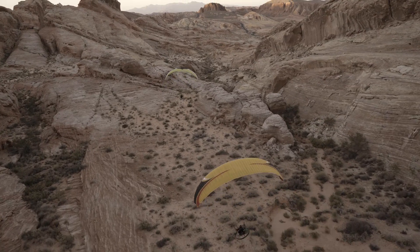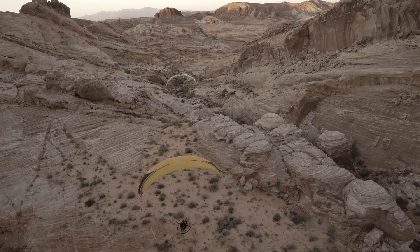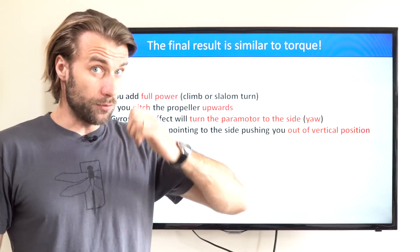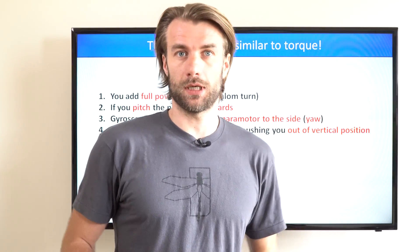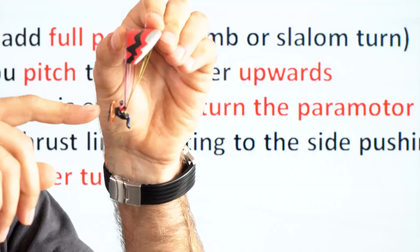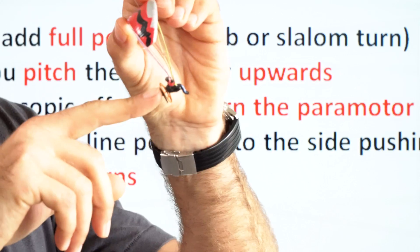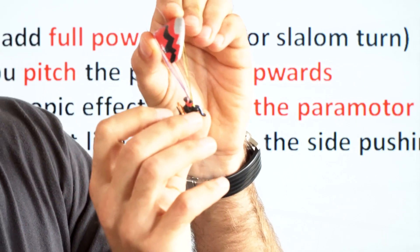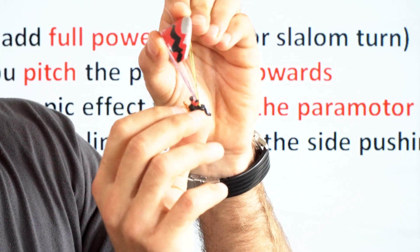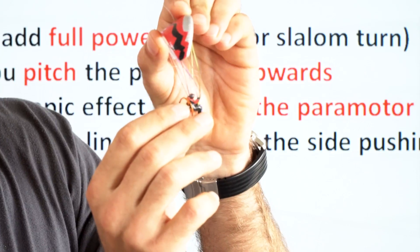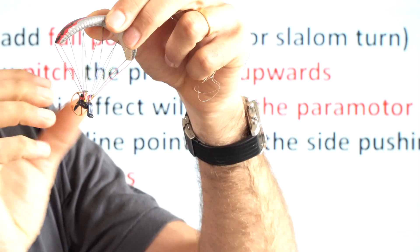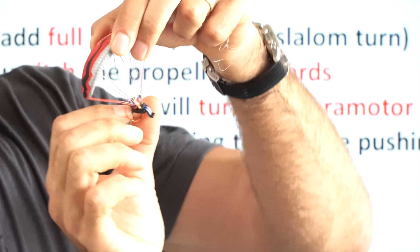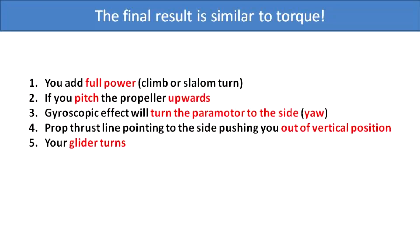So, let's do a quick summary. Now, let's assume a level flight at constant RPM at the beginning. Now, you add full power for a climb out or a slalom type turn. What happens? It will pitch the paramotor upwards. And the gyroscopic effect will turn the pilot and the paramotor to the side. Now, as the paramotor is pointing sideways, the thrust line is pushing you out of the vertical position and the glider will turn.